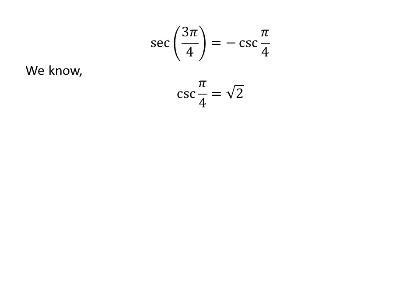We know cosecant of π/4 is equal to square root of 2. So secant of 3π/4 is equal to minus square root of 2.